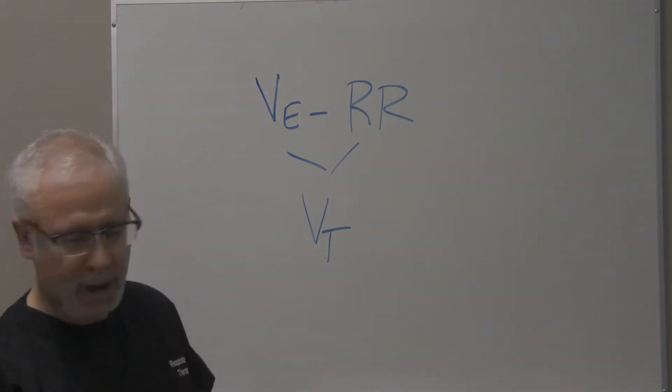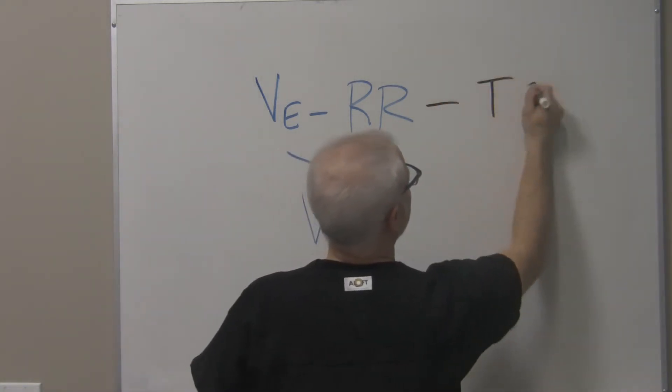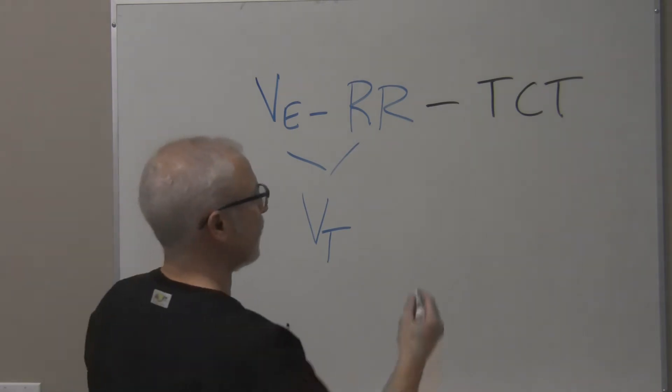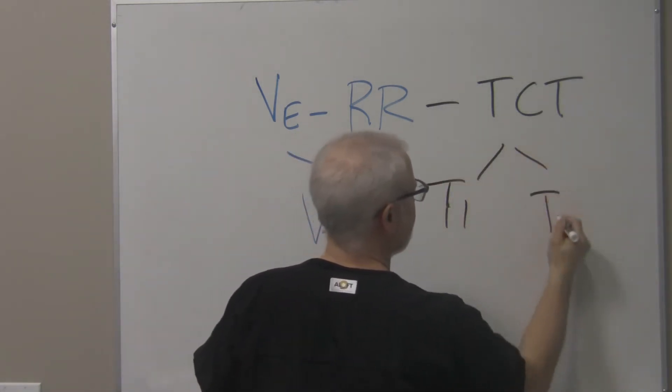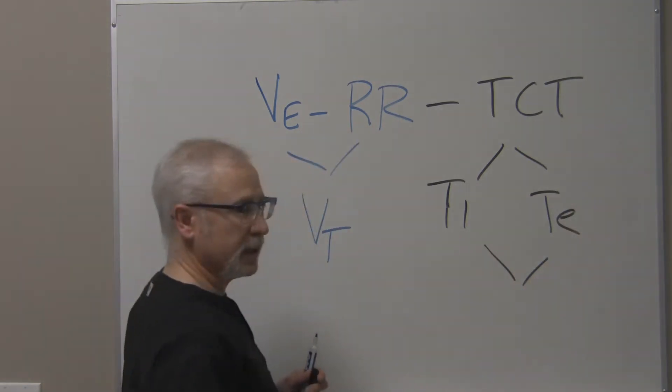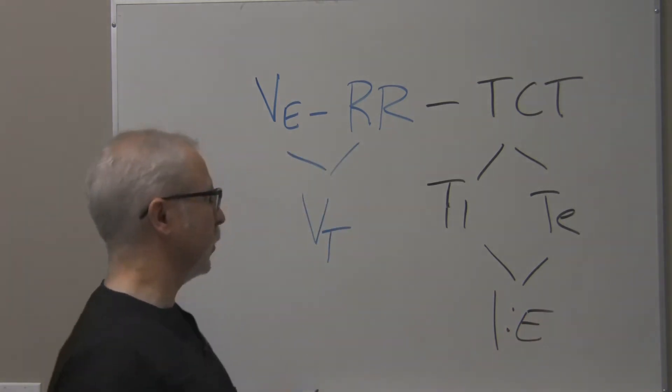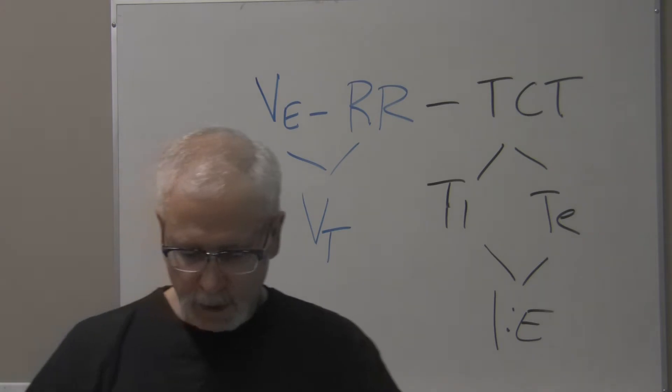From the respiratory rate, what we can get from that is total cycle time. With total cycle time, it splits up into Ti as well as Te, and Ti and Te can come together to give you the I to E ratio. But there's one last relationship here that we need to look at within this conglomerate of ventilation dynamics.